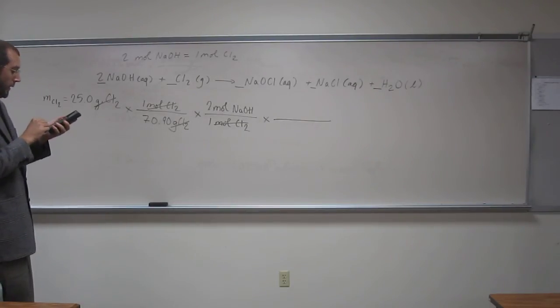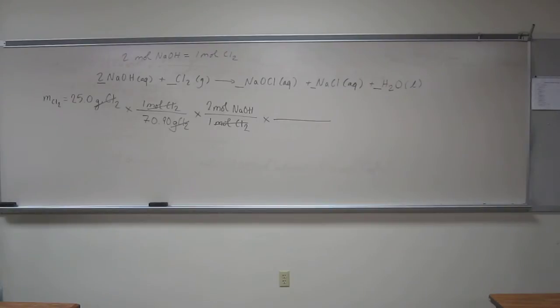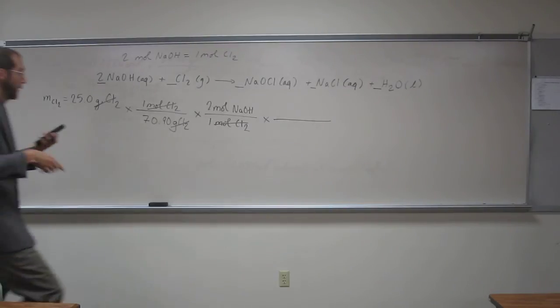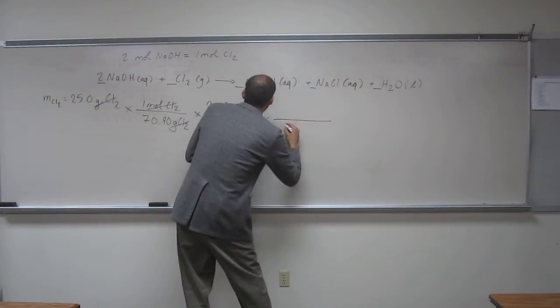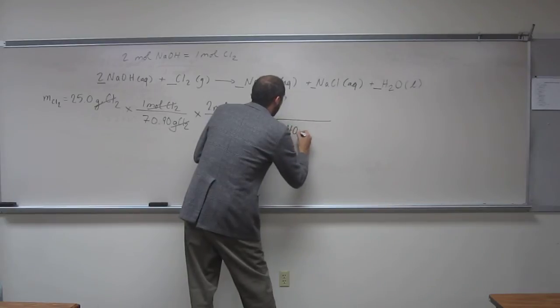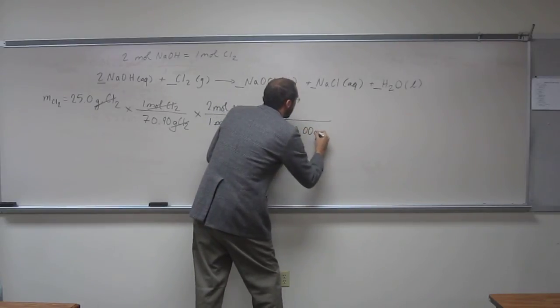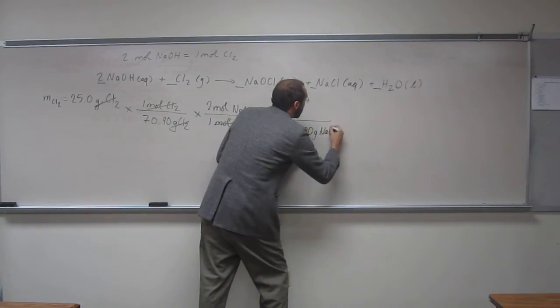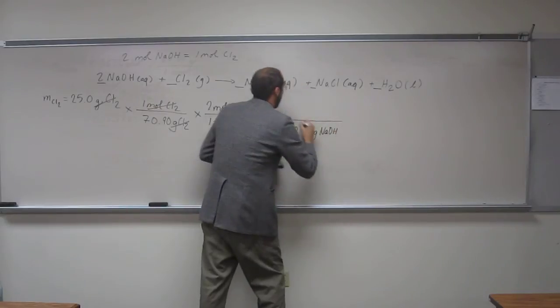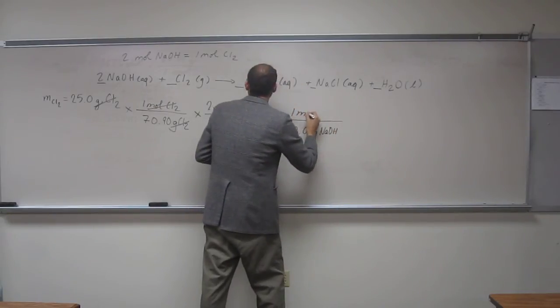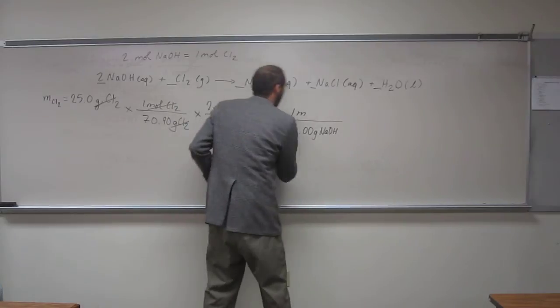Sodium is 22.99, plus oxygen is 16, plus hydrogen is 1.008. So I got 40.00 grams of sodium hydroxide per one mole.